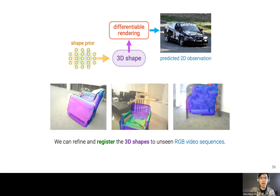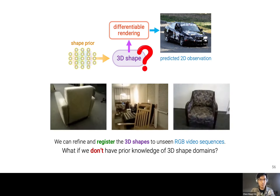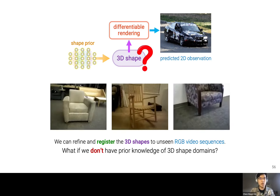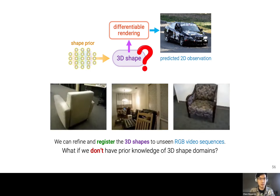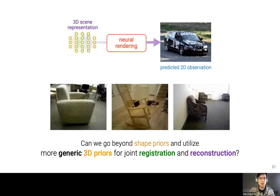Shape priors are very useful if we know what kinds of shapes or categories to expect. But what if we don't have such knowledge in advance? We ask: can we alleviate this shape prior limitation and use a more generic prior for 3D, so that given a video sequence of a rigid scene we can recover dense 3D structures while also registering the camera poses together?